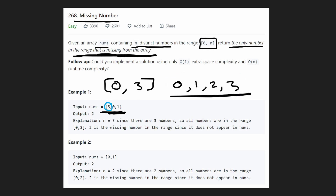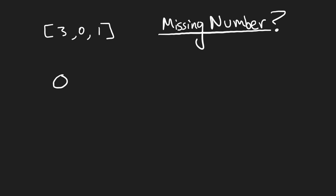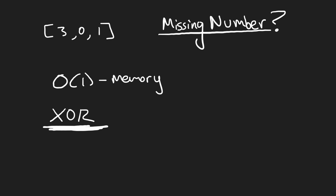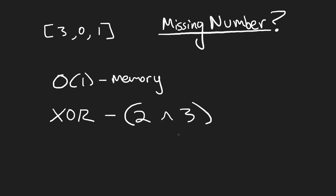One way to solve this with O(1) memory is by using binary properties — specifically the XOR operator, the exclusive or operator. If you've never heard of this, there's no way to intuitively figure out this solution. Let's say we have two numbers: 2 and 3. We want to exclusive or them. This is a binary operation, so we look at the binary representation of 2, which is 10, and 3, which is 11.